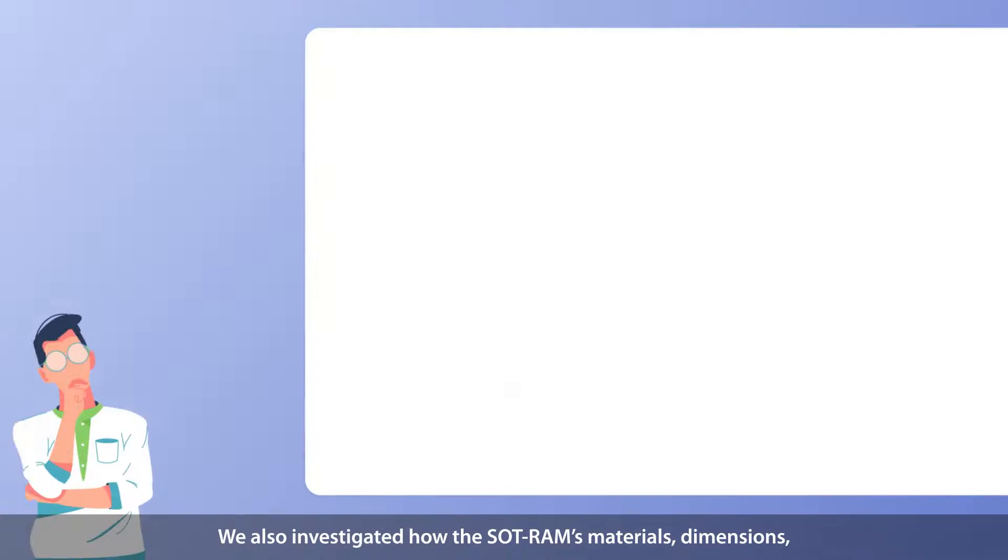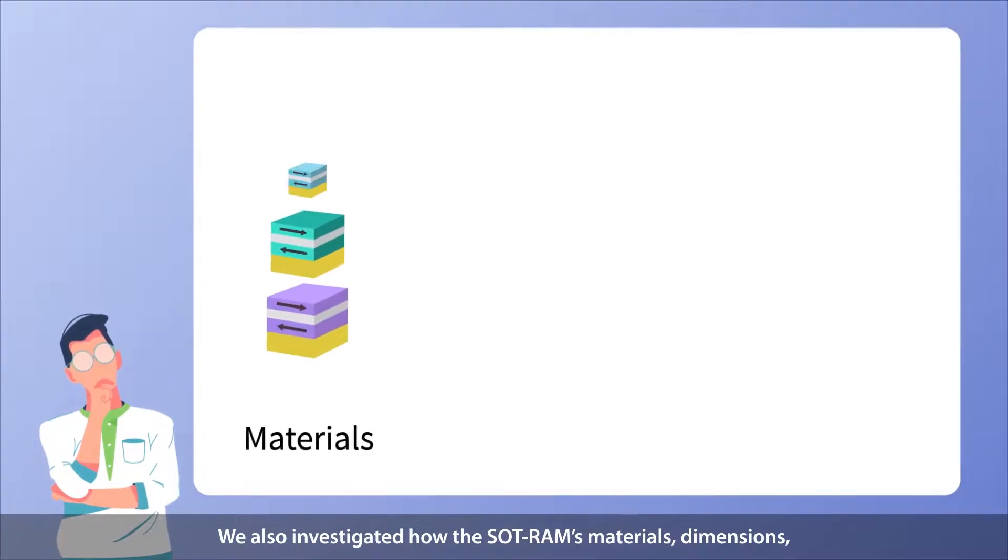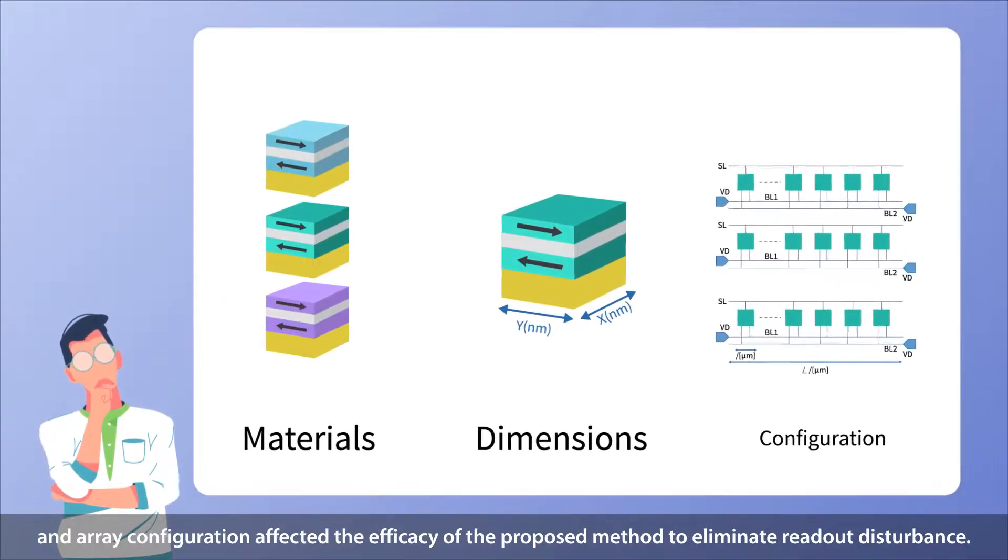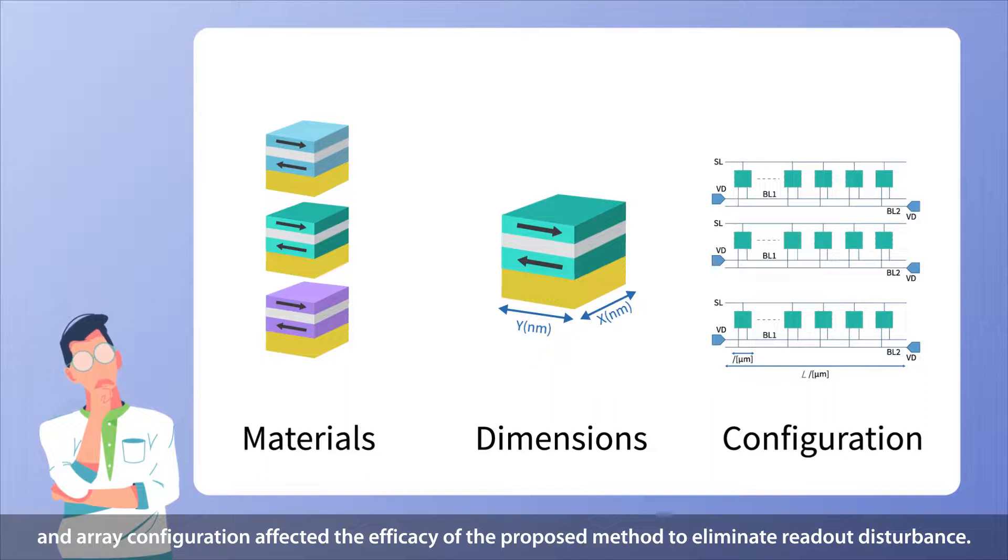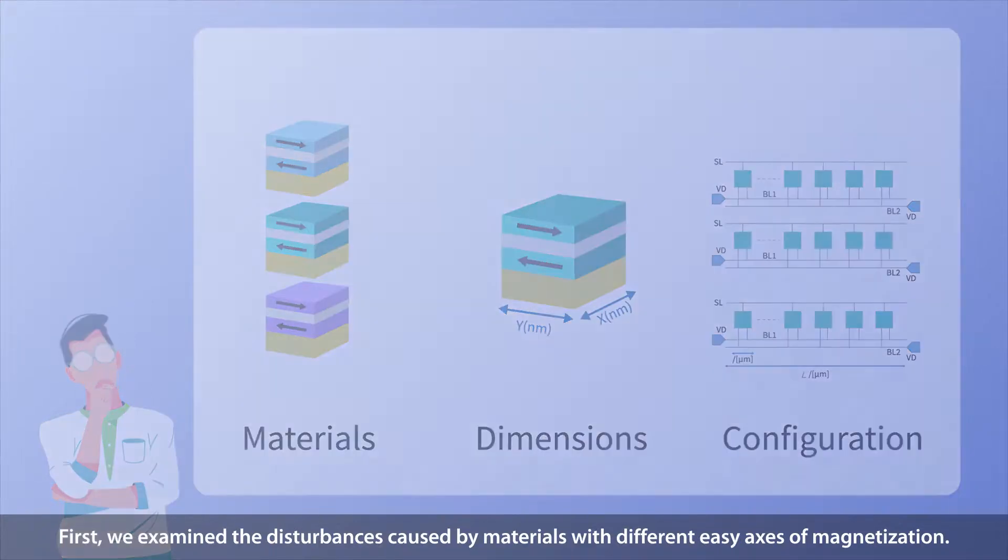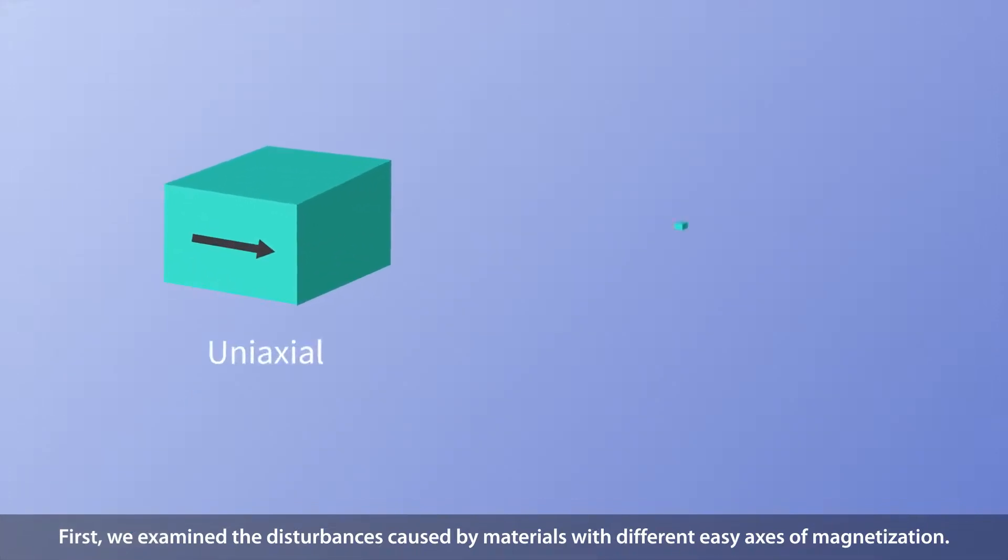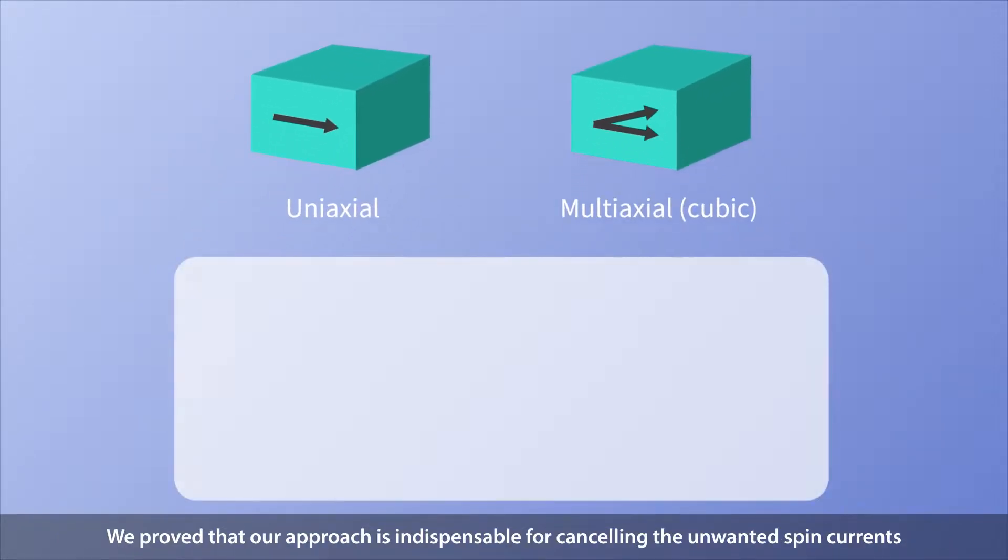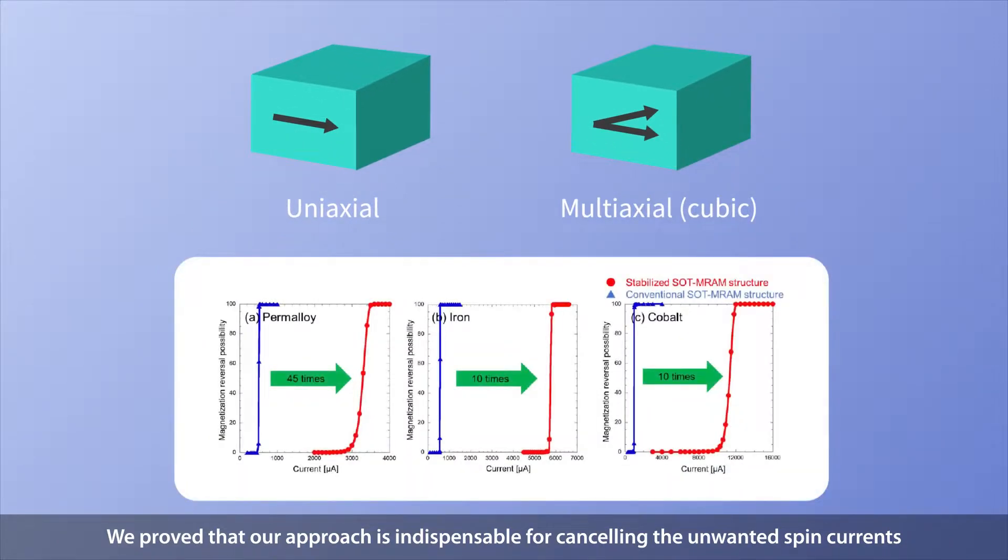We also investigated how the SOT RAMs materials, dimensions, and array configuration affected the efficacy of the proposed method to eliminate readout disturbance. First, we examined the disturbances caused by materials with different easy axes of magnetization. We proved that our approach is indispensable for canceling the unwanted spin currents and thus reducing readout disturbances.